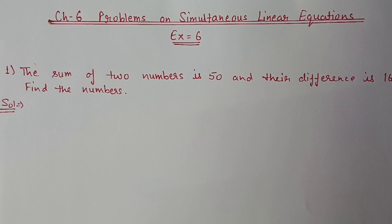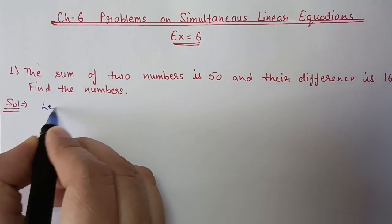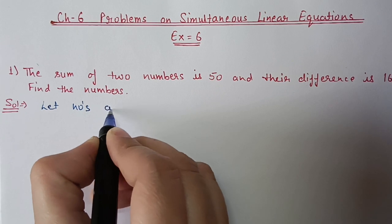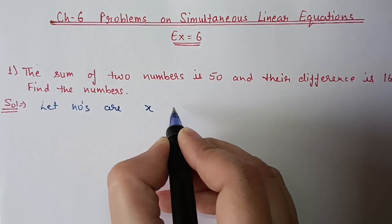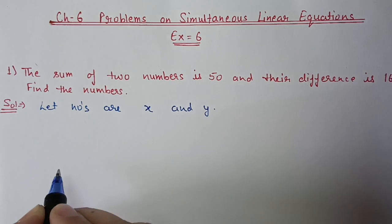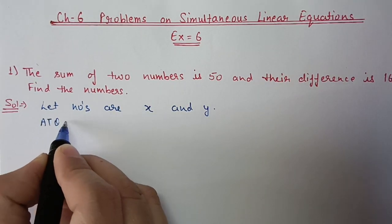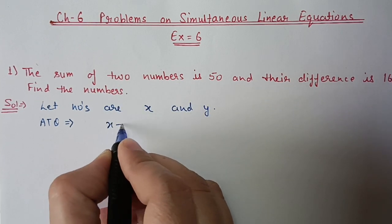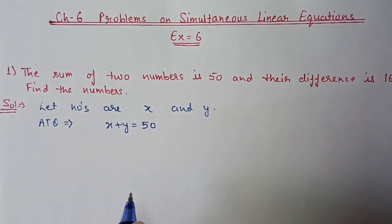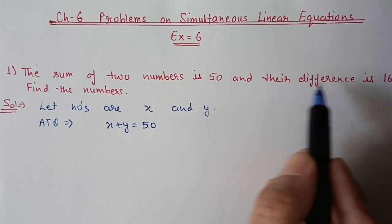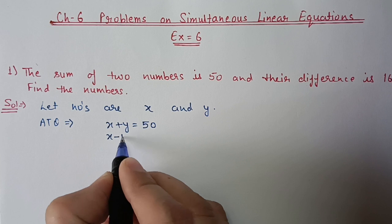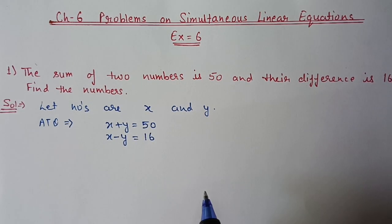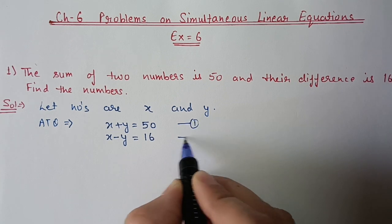First question: the sum of two numbers is 50 and their difference is 16 — find the numbers. Let the numbers be x and y. According to the question, the first equation is x + y = 50, and the second equation is x − y = 16.